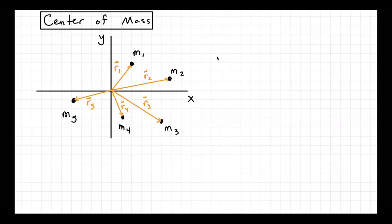So I've got a system here, just a two-dimensional world. I've got an x-axis and a y-axis, and we're looking at positions of various masses in this space. I've got five masses, m1 through m5, and I've got five position vectors for each of the masses: r1, r2, r3, r4, and r5. This is a system of a bunch of discrete masses. We define a center of mass for this system as the position that represents the weighted average of all the mass in the system.